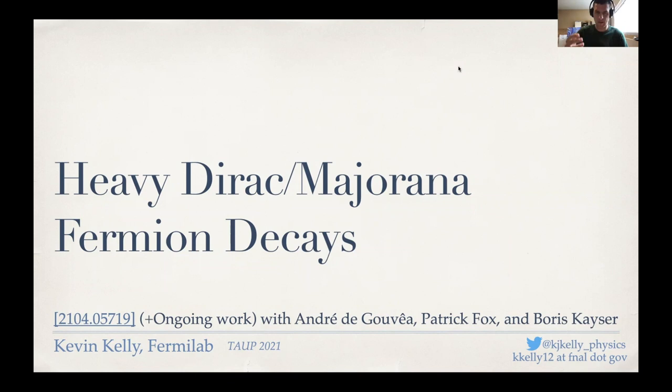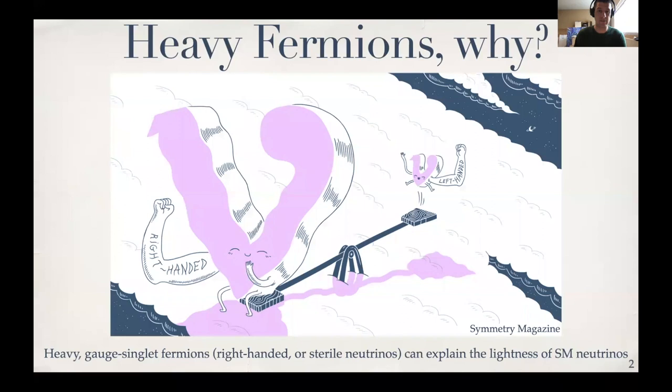So to motivate this work, I want to ask first the question, why should we think about heavy fermions, specifically heavy neutral fermions? Well, the most compelling motivation that I can think of is the fact that we have neutrinos in the standard model that are fermions that happen to have a very small mass. And some of the simplest extensions of the standard model that explain the lightness of the standard model neutrino masses include things like heavy neutral fermions, often known as right handed or sterile neutrinos that are standard model gauge singlets. And through the seesaw mechanism or some other physics are responsible for why the standard model neutrinos are so light.